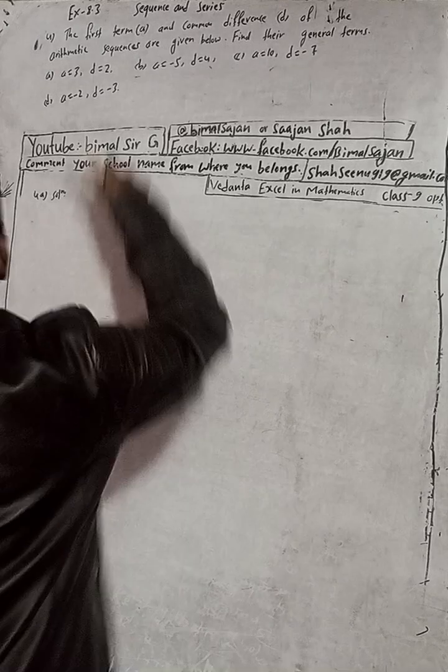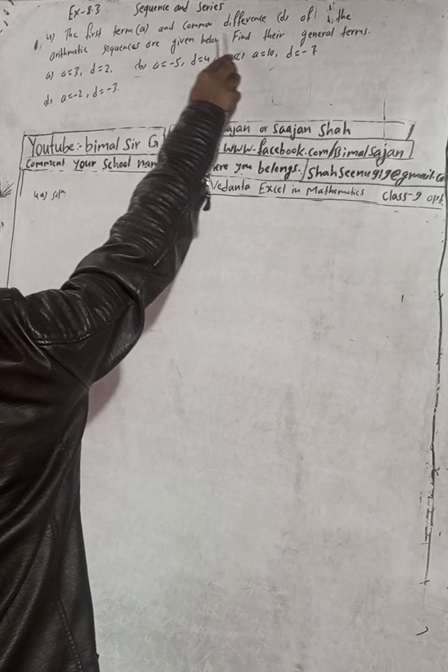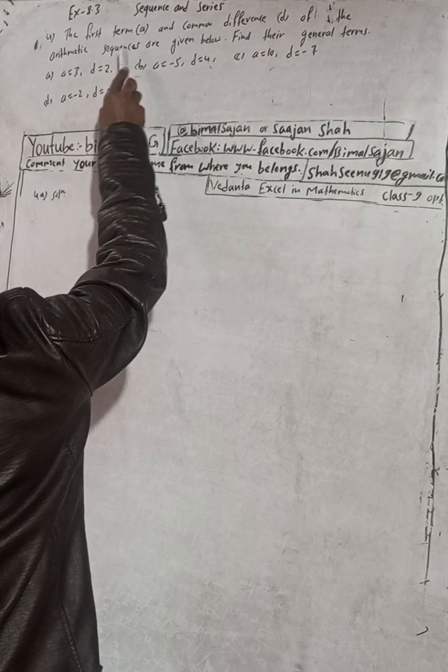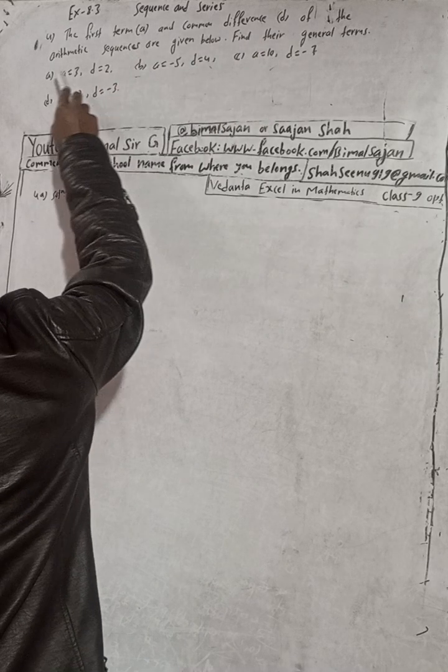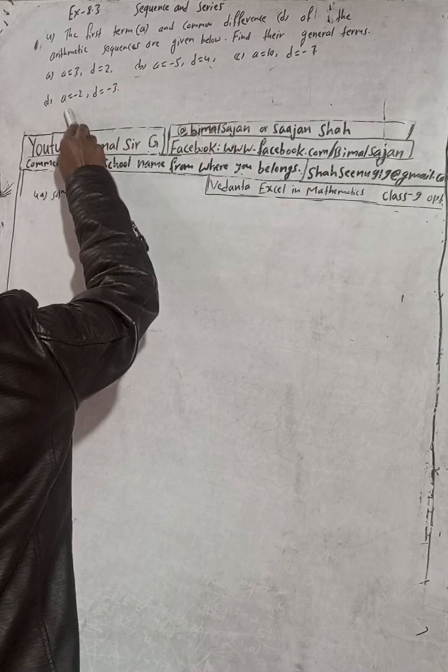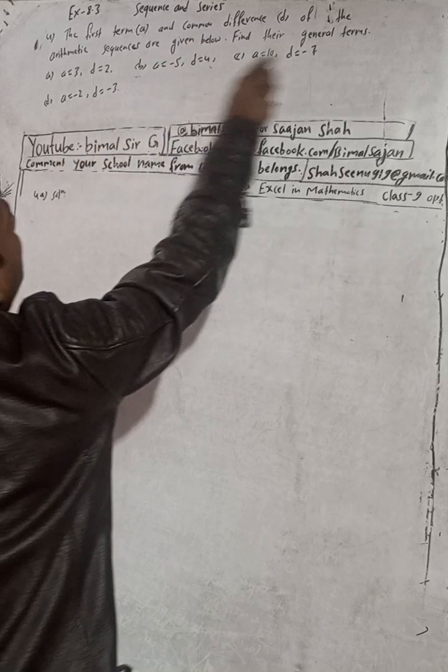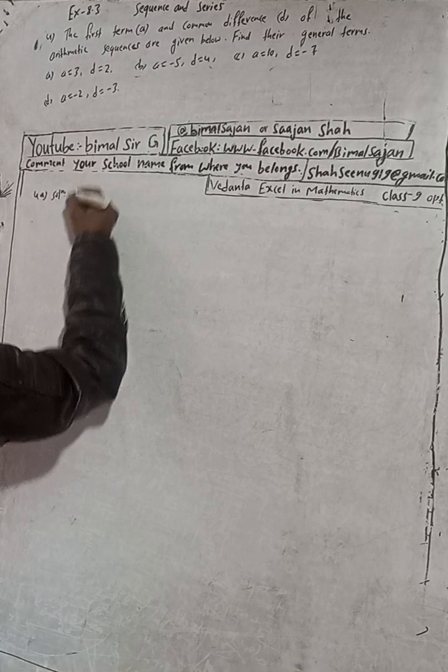Hi Class 9 and 10 students, welcome back to Bimal Sarji's YouTube channel. This is question number 4, Exercise 8.3, Sequence and Series, Class 9 Vedant Excel in Mathematics. Don't forget to check the playlist. The question gives the first term A and the common difference D of arithmetic sequences, with parts A, B, C, D. We have to find their general terms.